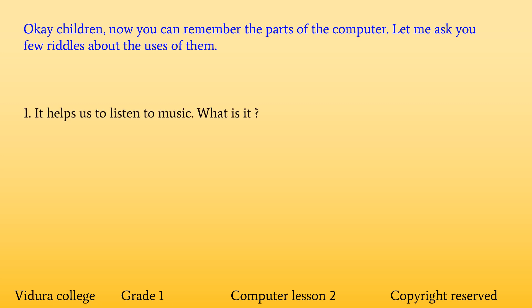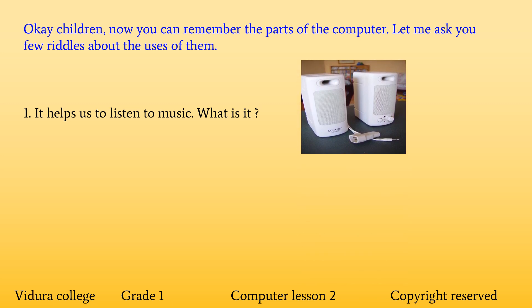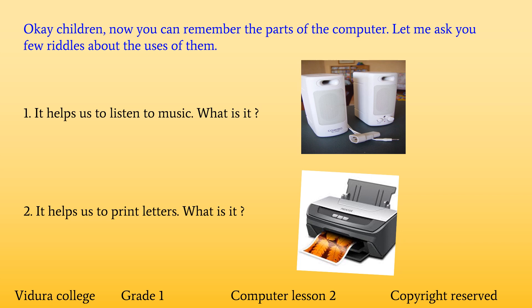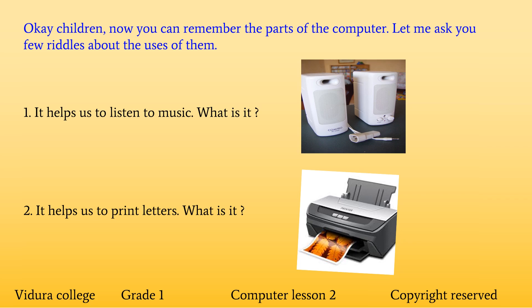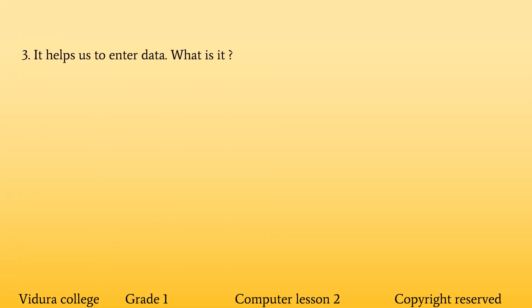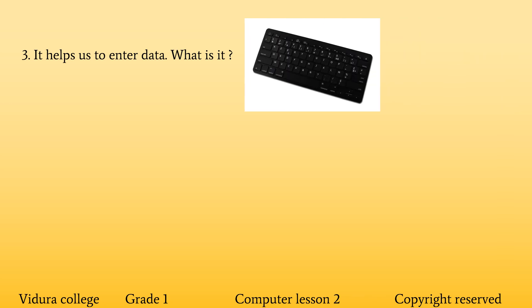Number 1: It helps us to listen to music. What is it? Speakers. Number 2: It helps us to print letters. What is it? Printer. Very good — we can take printouts using the printer. Number 3: It helps us to enter data. What is it? Keyboard. The keyboard helps us to type letters, numbers, or words.